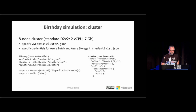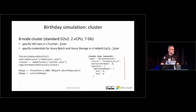First we decide how big a cluster we want and how powerful each machine should be. In this case I'm doing an eight-node cluster where each machine is a two-CPU machine with seven gigabytes of RAM. You specify this in a file called cluster.json which describes the VM type and cluster size. Once that file is defined, you load the back-end library, load the cluster definition file, make the cluster, register the back end, and then it's exactly the same foreach code as before.